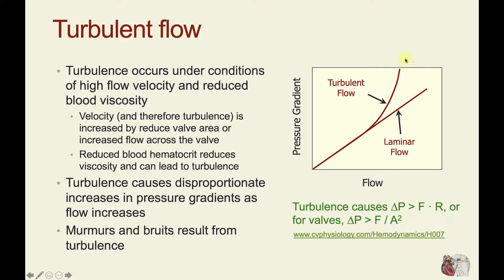This departure is associated with turbulence. Turbulence causes delta P not to equal flow times resistance, but causes the pressure gradient across the valve to be greater than flow times resistance. For valves, substituting in the cross-sectional area, the delta P or pressure gradient is greater than the flow divided by the valve area squared.